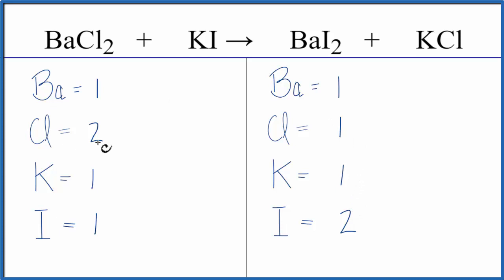Why don't we begin by balancing the chlorines. If we put a two in front of the KCl, we have one chlorine times two. That'll give us two chlorines. Those are balanced.